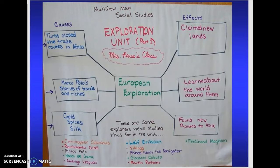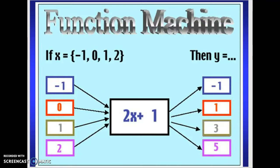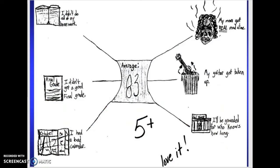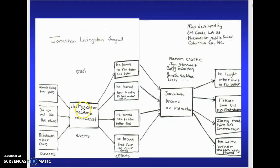For European exploration: these things caused the exploration, and these were the effects. The kids take what they've already learned, combine it, and write about it. I love this for math — a function machine: this is inputted and this is outputted, so this caused the effect of this. I also love this one: it shows why a kid got the grade he did — so thinking maps can be used for character ed too. He didn't do all his homework as a cause; the effect is he's grounded and his mama's got steam coming out of her head. And parts of the story where Jonathan became an outcast, then became an instructor — so one event caused another, causing something else. Super high DOK.